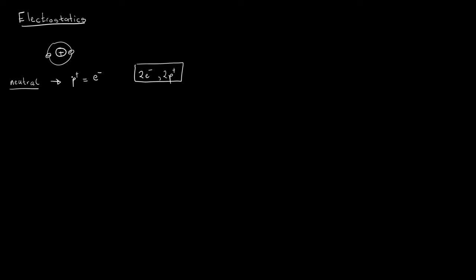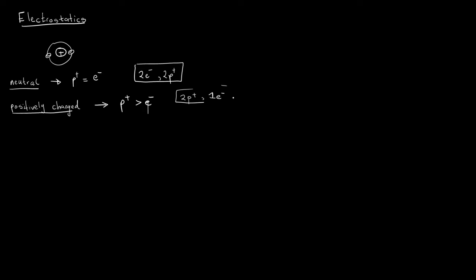For example, if an atom has two electrons and two protons, we say it is a neutral atom. Now, we can have variations where there are more protons than electrons. If an atom has more protons than electrons, it becomes positively charged — for example, two protons and one electron.